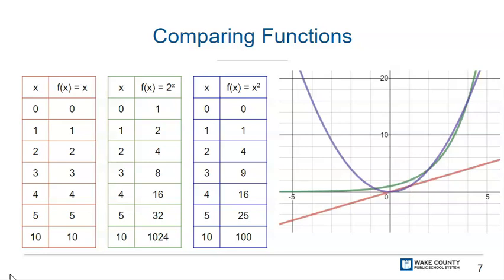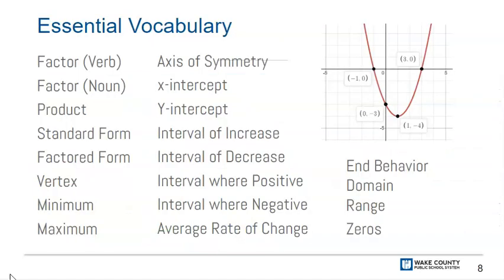In lesson 9, you will compare quadratic functions to linear and exponential functions. You will look at their rates of change and end behavior. Here is a list of key vocabulary terms for this unit. Some of these vocabulary terms should already be familiar to you from previous courses.